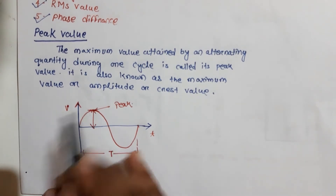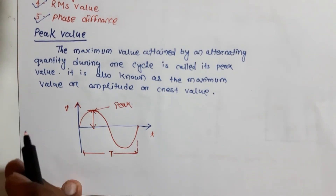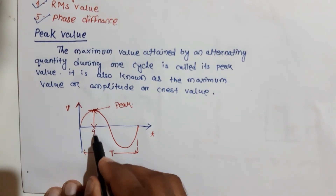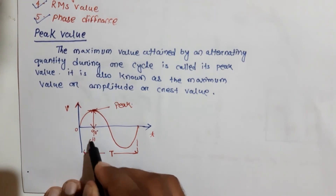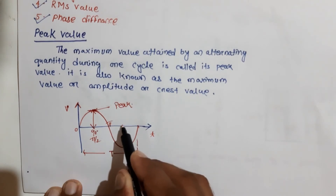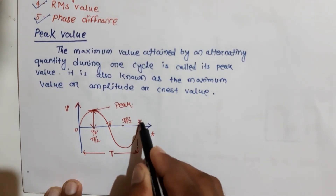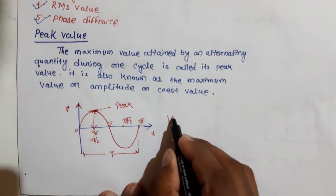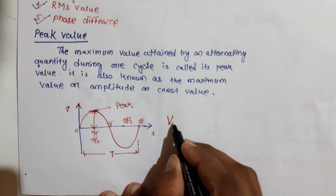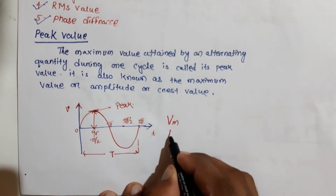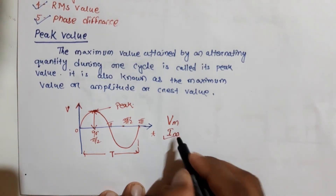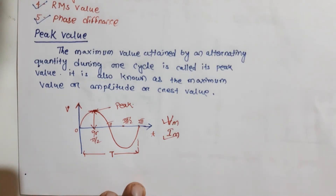In the case of a sinusoidal waveform, the peak value is always attained at 90 degrees. At 0 degrees the value is 0, then at 90 degrees (π/2) it reaches the peak, and at 180 degrees (π) it returns to 0. The peak value is represented by Vm for voltage and Im for current.